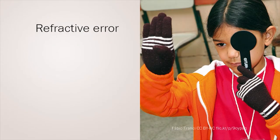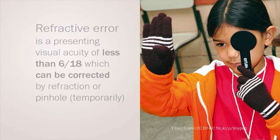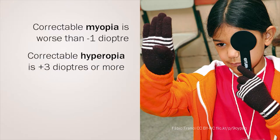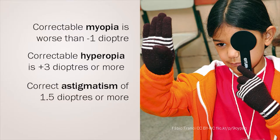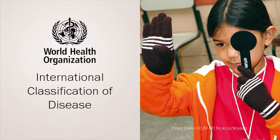Refractive error in the public health context is defined as a presenting visual acuity of less than 6/18, which can be corrected by refraction or by pinhole. Correctable myopia is defined as worse than minus 1 diopter. Correctable hyperopia is defined as plus 3 diopters or more. It is essential to correct astigmatism of 1.5 diopters or more. The patient's presenting visual acuity is categorised using the World Health Organisation's International Classification of Disease.